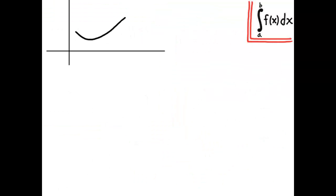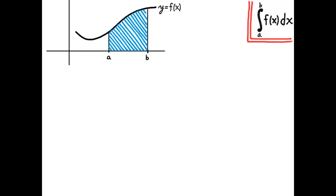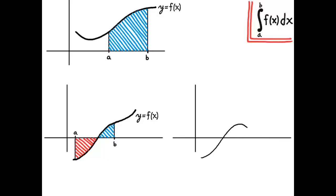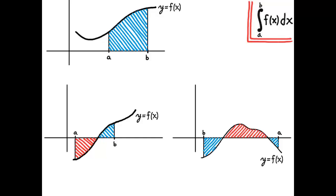Here again is a picture of the function y equals f of x, and the shaded region that represents the integral from a to b of f of x dx. We can think of that blue region as being positive. But another function y equals f of x might have certain regions that represent a negative part of the Riemann sum. And still other situations have a on the opposite side — a is to the right of b. If a is a greater number than b, then we're going backwards, and in that case the signs reverse.